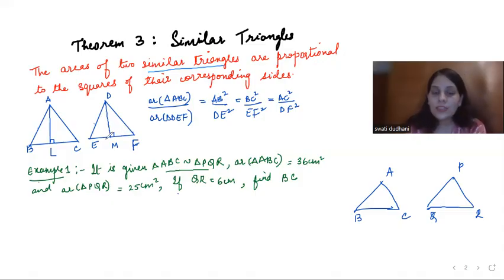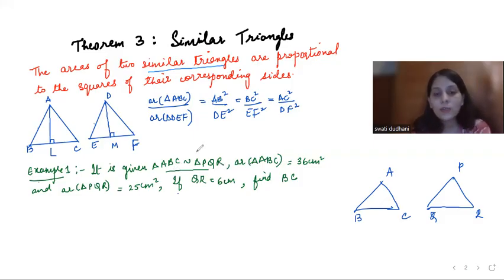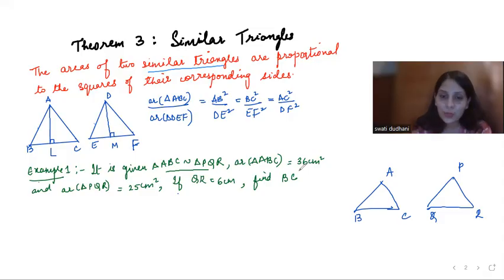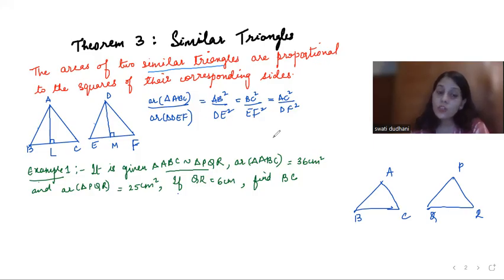Now let us see some questions on this theorem for better understanding. The first one: it is given that triangle ABC is similar to triangle PQR, so the triangles are similar and you can use this theorem. The area of triangle ABC is equal to 36 cm², the area of triangle PQR is equal to 25 cm², QR is 6 cm, and we need to find BC. Since the area values are given and the triangles are similar, I can directly use the theorem.